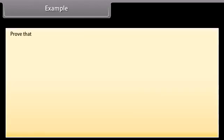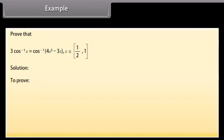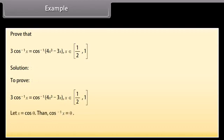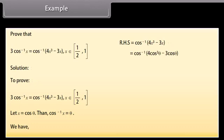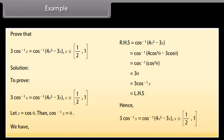Prove that 3 cos⁻¹ x = cos⁻¹(4x³ − 3x), for x ∈ [1/2, 1]. Solution: Let x = cos θ, so θ = cos⁻¹ x. Then cos⁻¹(4x³ − 3x) = cos⁻¹(4 cos³θ − 3 cos θ) = cos⁻¹(cos 3θ) = 3θ = 3 cos⁻¹ x, which equals the left-hand side. Hence 3 cos⁻¹ x = cos⁻¹(4x³ − 3x), for x ∈ [1/2, 1].